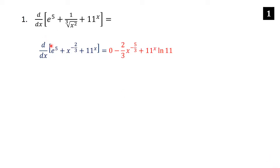The derivative of e to the fifth is zero because e to the fifth is a constant — e is just a number, so e to the fifth is some other number. For the second term, we use the power rule: bring down the negative two thirds, then subtract one from the exponent. Negative two thirds minus one equals negative two thirds minus three thirds, which is negative five thirds.